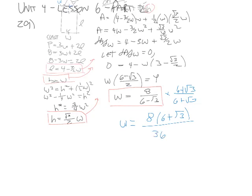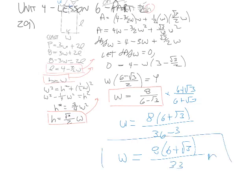and on the bottom, it's a difference of squares, so we have 36 minus 3, or our final answer of 8 times 6 plus root 3 over 33. So there is our width that would optimize this particular question.